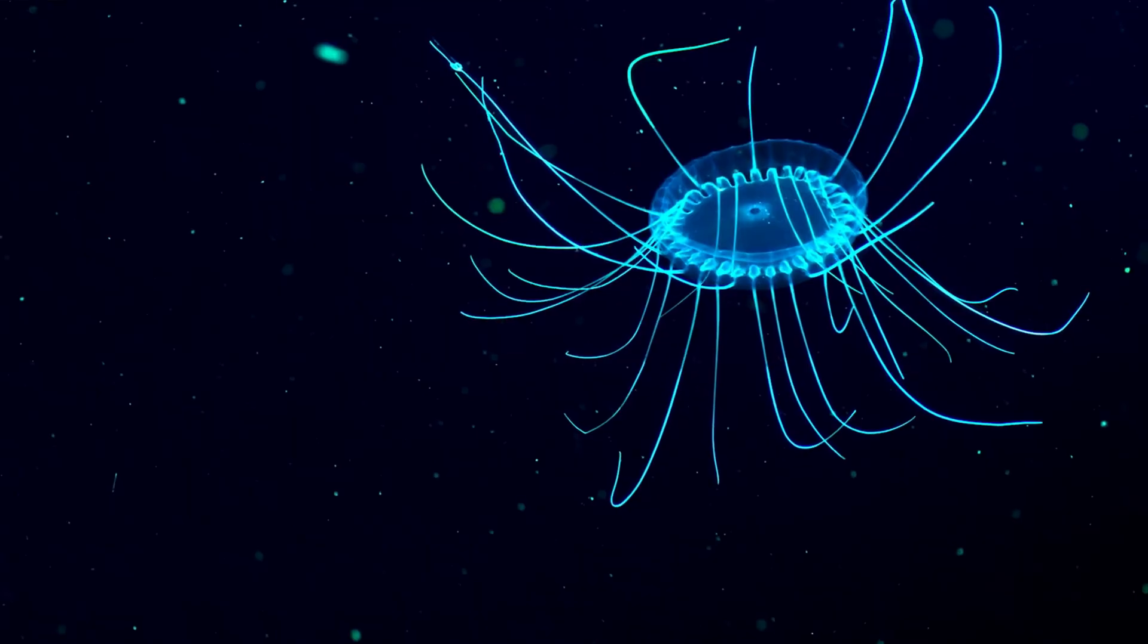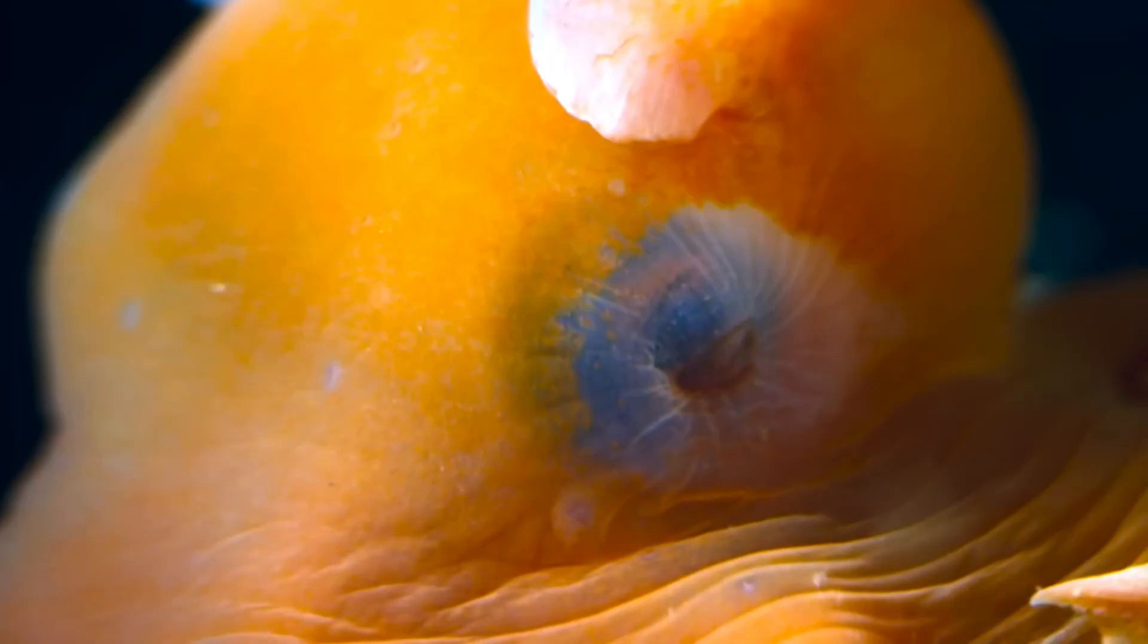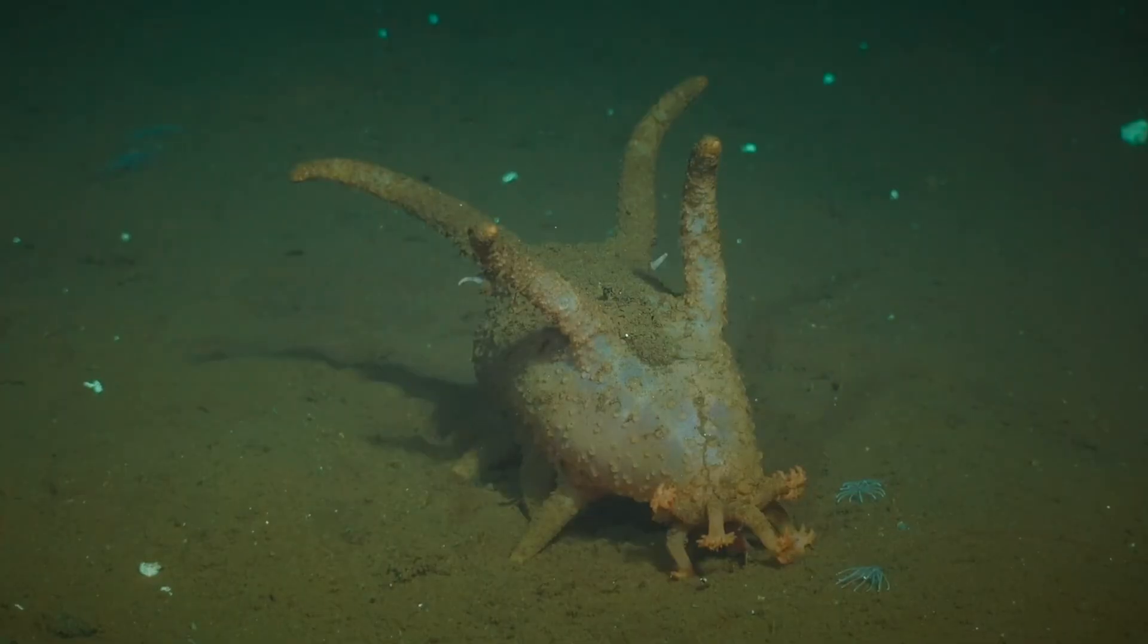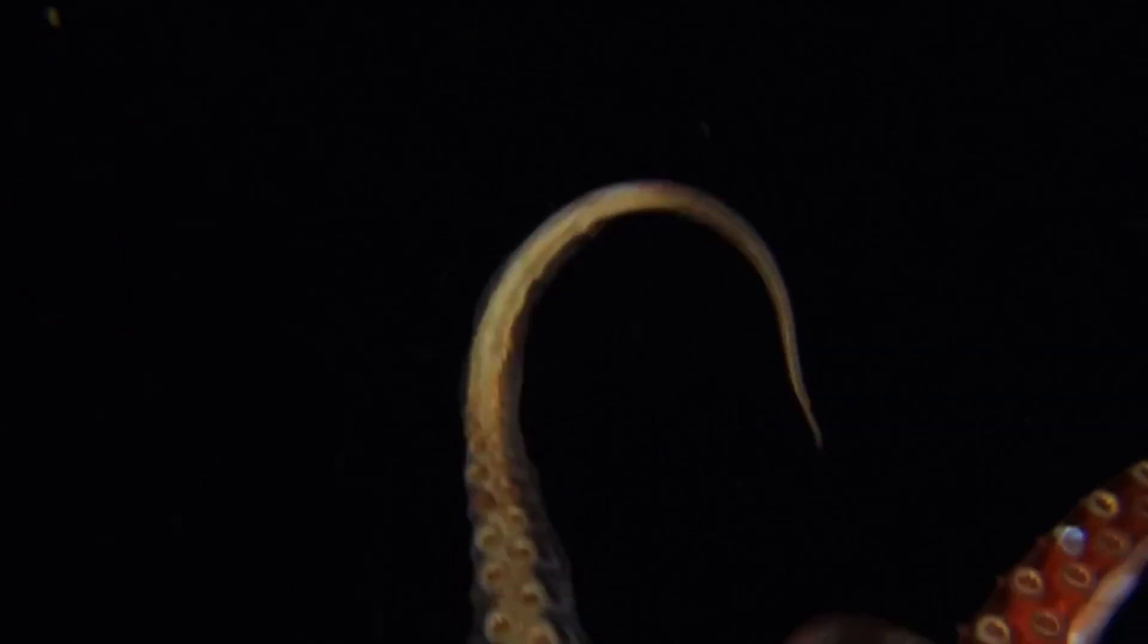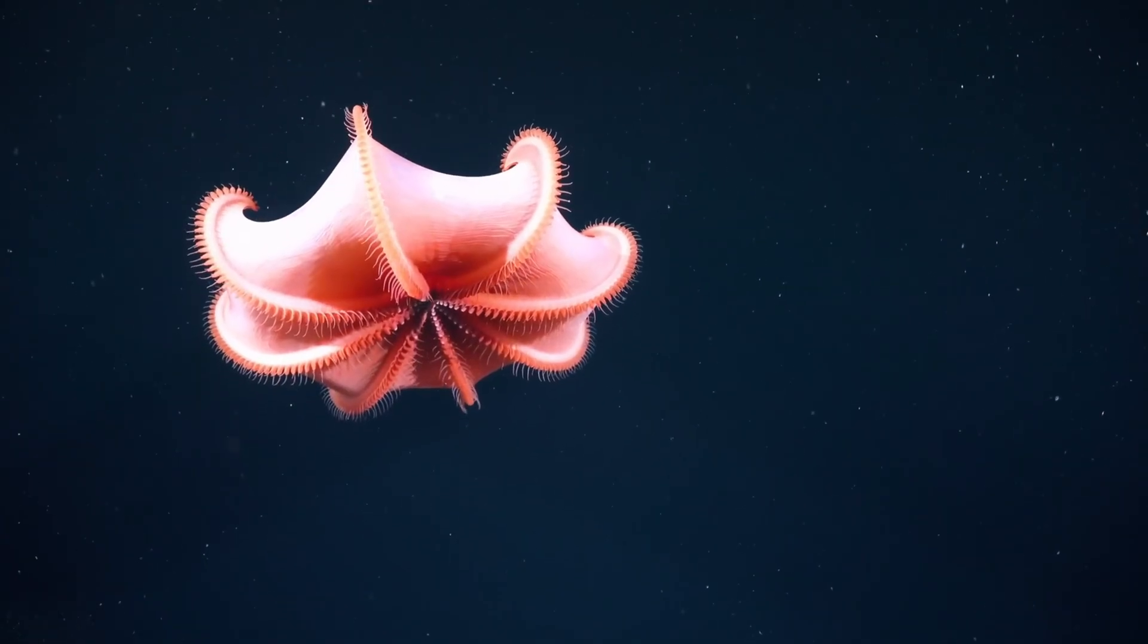The once adorable creatures from coral reefs have turned into something far less charming. Their bodies stretch like rubber, their eyes either balloon to monstrous proportions or disappear completely. And then tentacles begin to sprout from places no creature should ever grow tentacles.